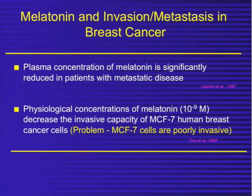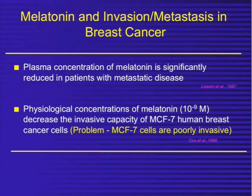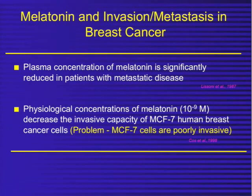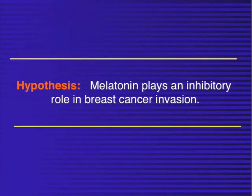Melatonin interacts with nuclear receptors with profound effects on breast cancer. Turning now to melatonin and invasion and metastasis: two early studies are relevant. Lassoni in 1987 found plasma concentrations of melatonin were significantly reduced in patients with metastatic disease. A follow-up study by Sam Koss out of Spain showed that physiologic concentrations of melatonin could inhibit the invasive capacity of MCF-7 human breast cancer cells, though we now know that MCF-7 cells are poorly to non-invasive in most laboratories, so we wanted to readdress this.